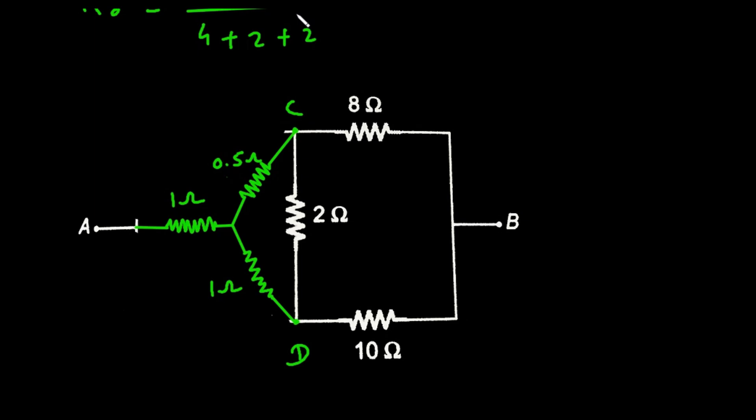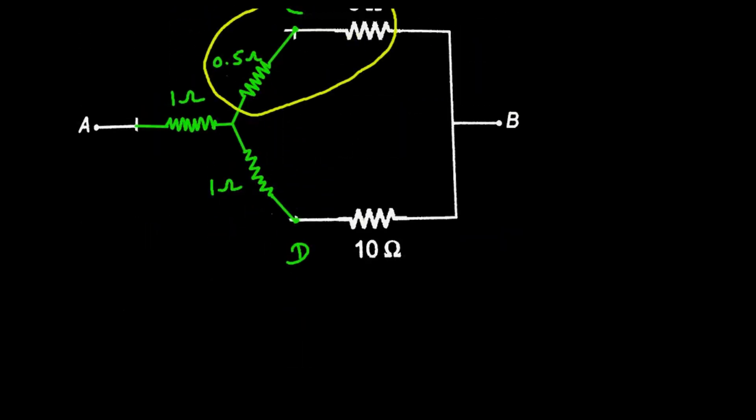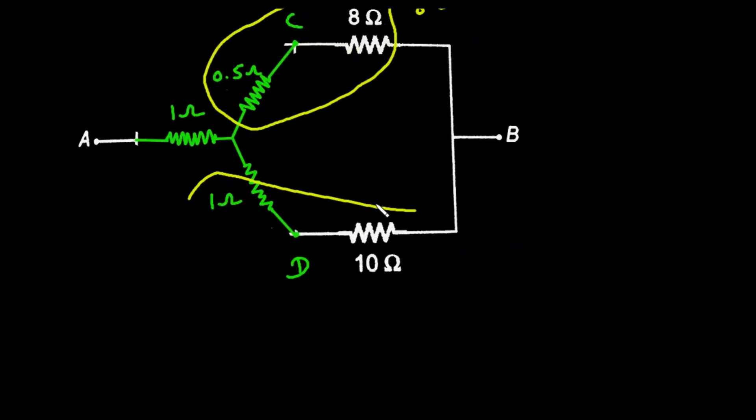And we can erase this resistance too because we have converted this delta into star. Now we can see we can easily simplify this network. These two are connected in series. So this will be simply 8.5 ohm and this will be simply 11 ohm.